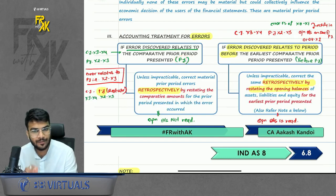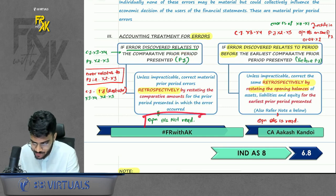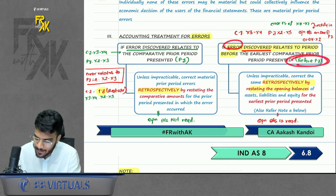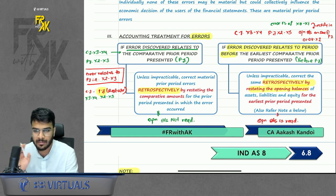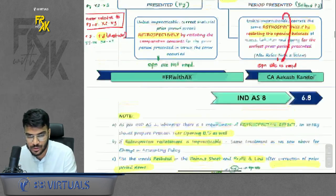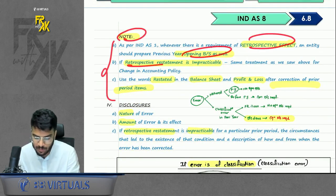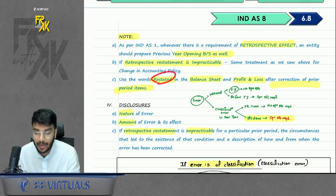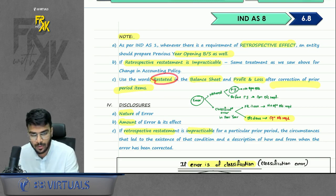Accounting treatment: if error relates to the previous year, rectify retrospectively by changing the comparatives of that previous year — no opening balance sheet required since only previous year figures change. If error relates to before previous year, apply retrospectively and also prepare an opening balance sheet, adjusting amounts therein. Whenever retrospective effect is given, prepare an opening balance sheet. If retrospective measurement is impracticable, disclose the reason. When restating prior period figures, use the word 'restated'.